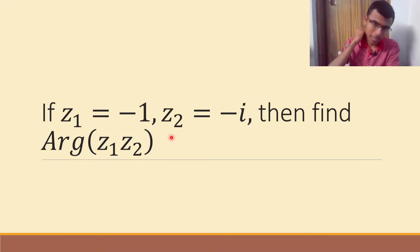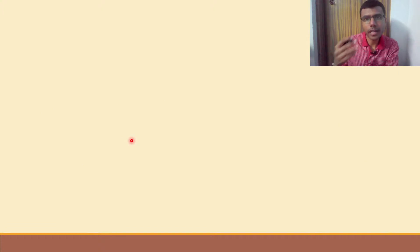Hello learners, now let us see how to solve this given question. Here we are given that z1 is minus 1, z2 is minus i. These two are complex numbers and we need to find out argument of z1 into z2.